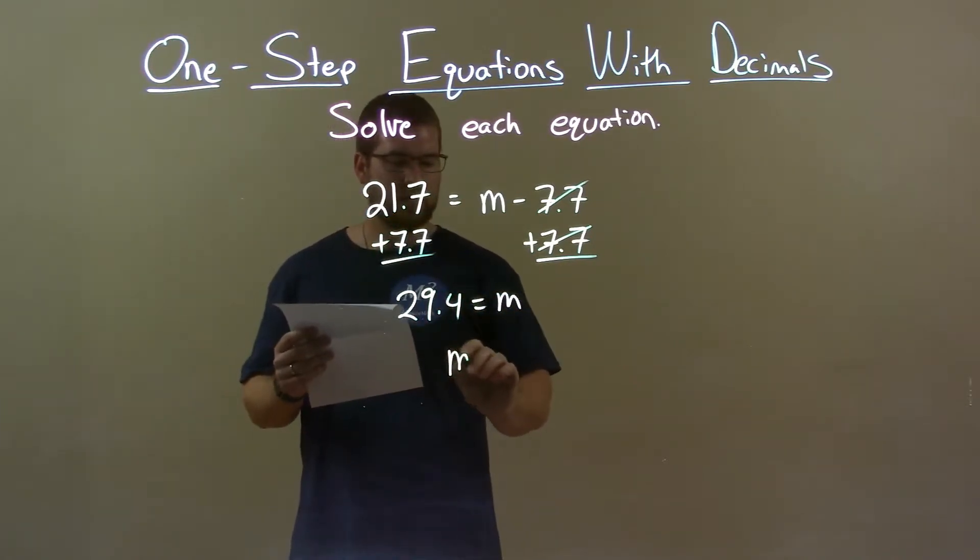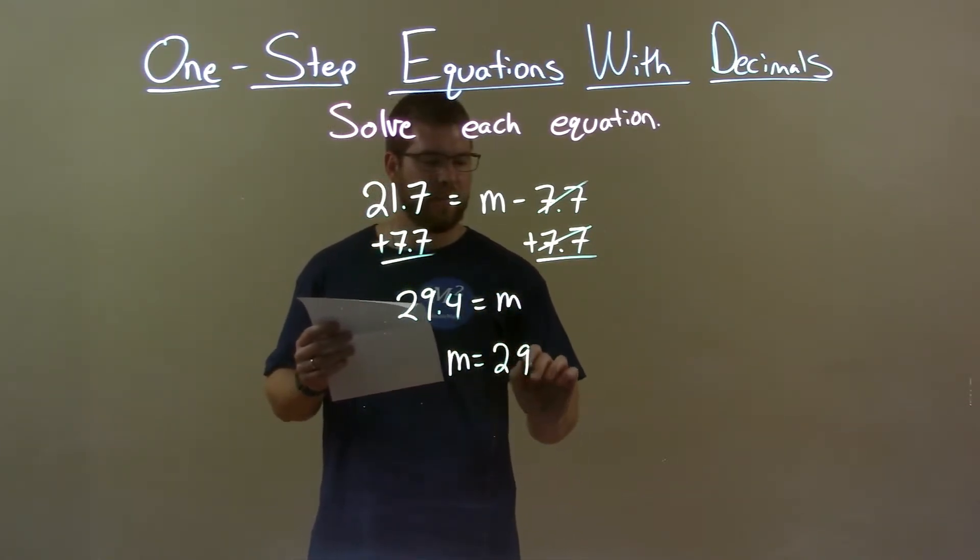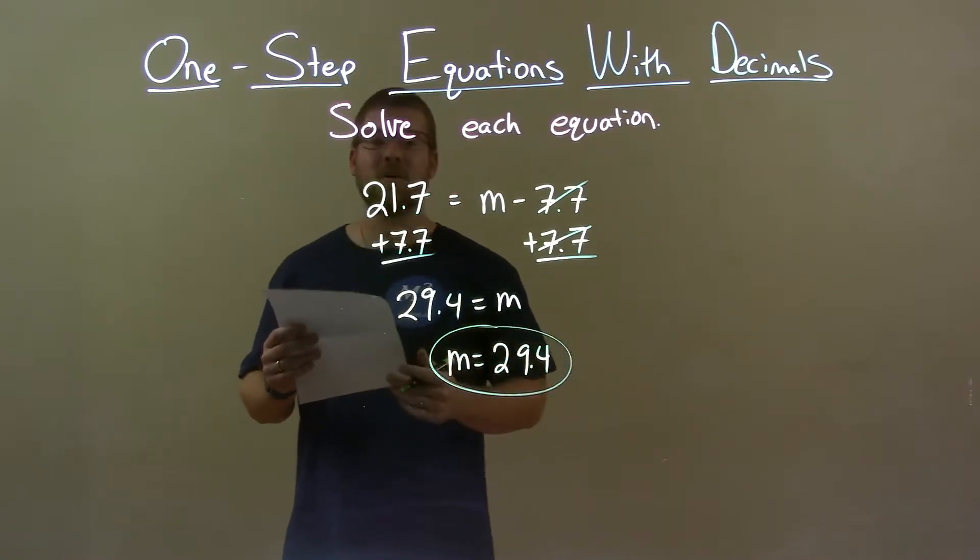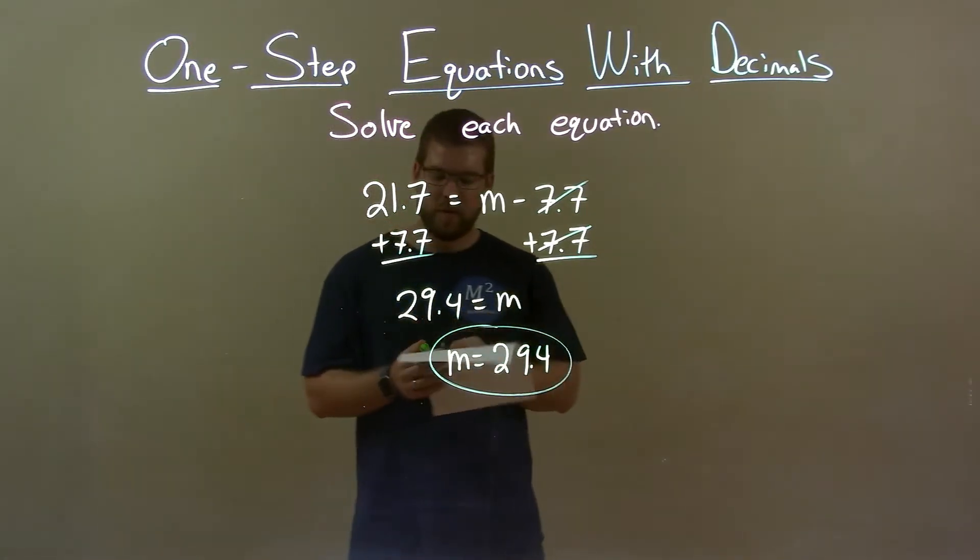We can rewrite this to have m come first. m equals 29.4, and that is our final answer. Quick recap: we're given 21.7...